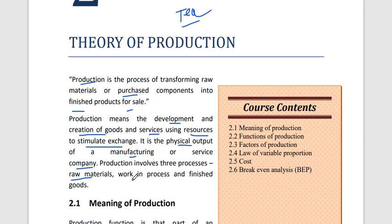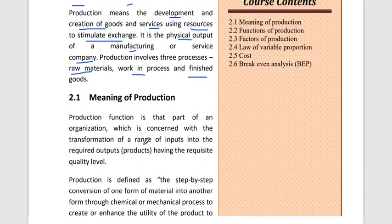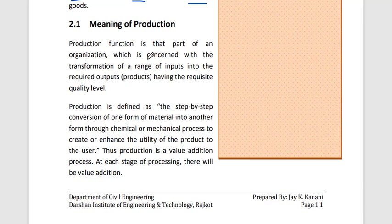Basically, production involves three processes: first, raw material; second, work in process — how we transform raw material; and third, finished goods or finished product. So production has three stages: raw material, work in process, and finished product.